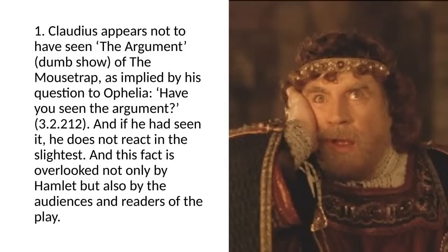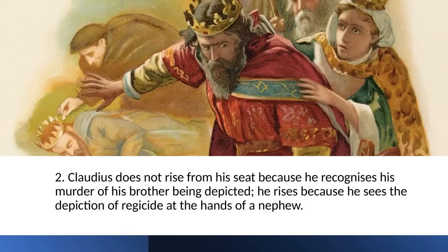Greg's first observation: during the Mousetrap there is a dumb show before the actual play takes place — this is where the pouring of poison in the king's ear happens, known as 'the argument.' It is implied by Ophelia asking Claudius about the argument that he hasn't actually seen it — he didn't take notice of what was going on. He doesn't react in the slightest; there's no stage direction. This fact is overlooked not only by Hamlet but also by audiences and readers of the play — many people imagine this is the moment Claudius stands up, but it actually isn't.